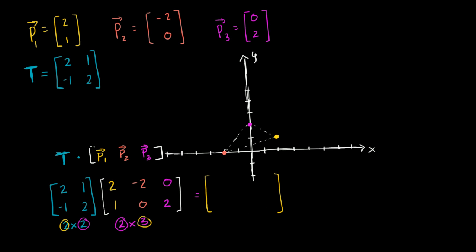Let's go step by step. The first entry, first row first column, is this row times this column: two times two is four, plus one times one is one, so four plus one equals five. Then negative one times two is negative two, plus two times one is two — that's negative two plus two, which is zero. So we already see it transformed two comma one to five comma zero. We consider this P1 prime — P1 after our transformation.